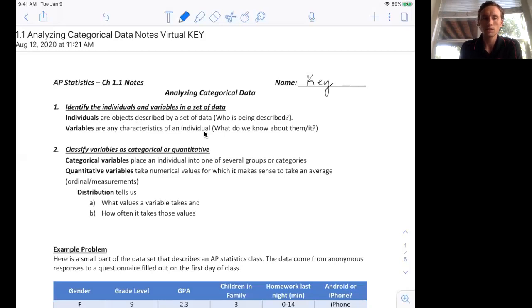The second standard is classifying variables as categorical or quantitative. Categorical variables are variables that can be placed into one of several groups or categories. Quantitative variables are numerical where it makes sense to take an average. So quantitative variables are generally or essentially counting something.